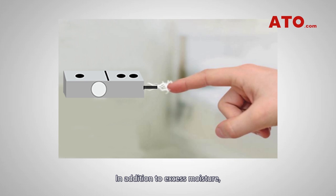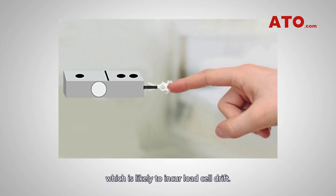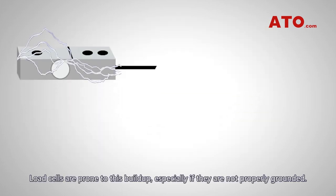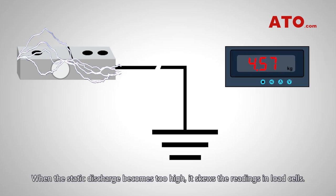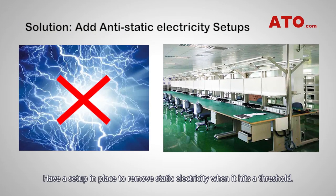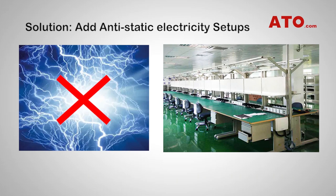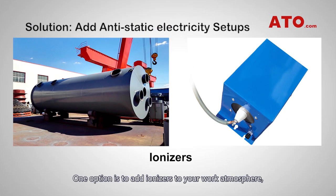In addition to excess moisture, a deficiency of it can introduce static electricity to your scale, which is likely to incur load cell drift. Load cells are prone to this buildup, especially if they are not properly grounded. When the static discharge becomes too high, it skews the readings in load cells. Have a setup in place to remove static electricity when it hits a threshold. One option is to add ionizers to your work atmosphere to reduce the amount of positive and negative ions in the air.